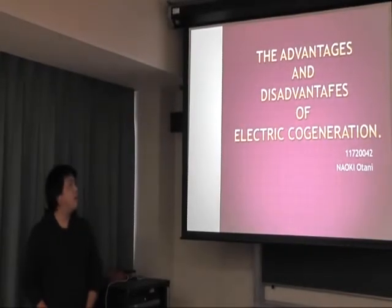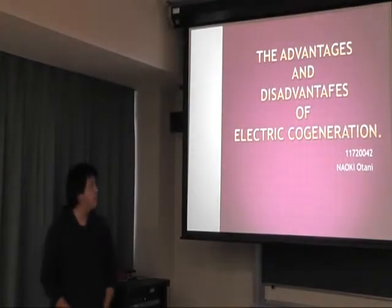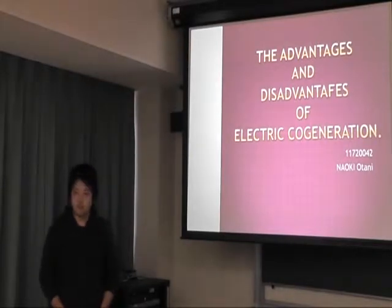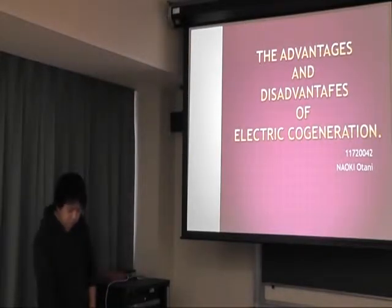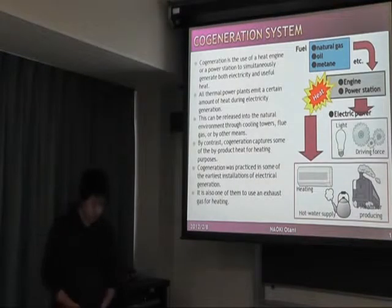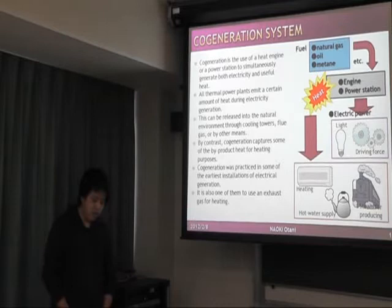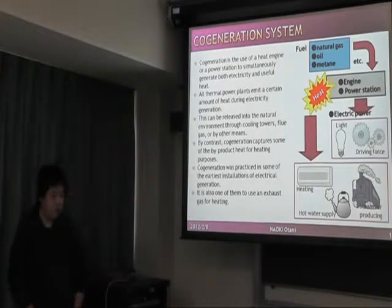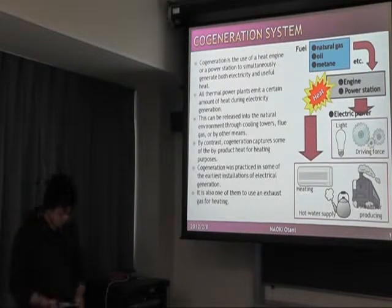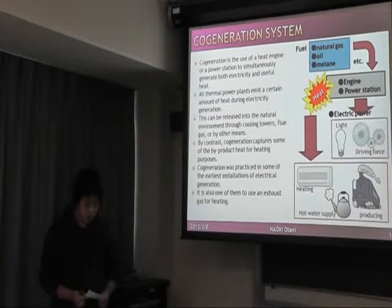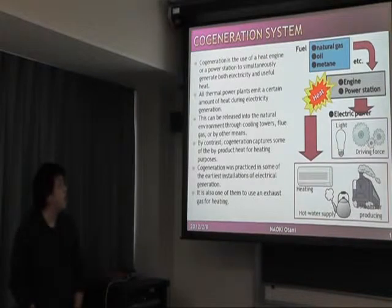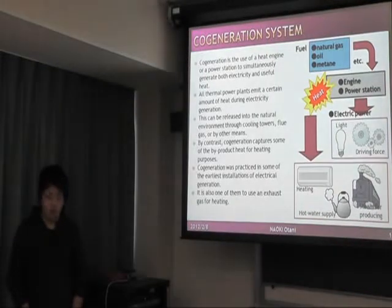The topic is the advantages and disadvantages of electric cogeneration. First, the use of cogeneration systems. Cogeneration is the use of a heat engine or a power station to simply generate both electricity and heat.